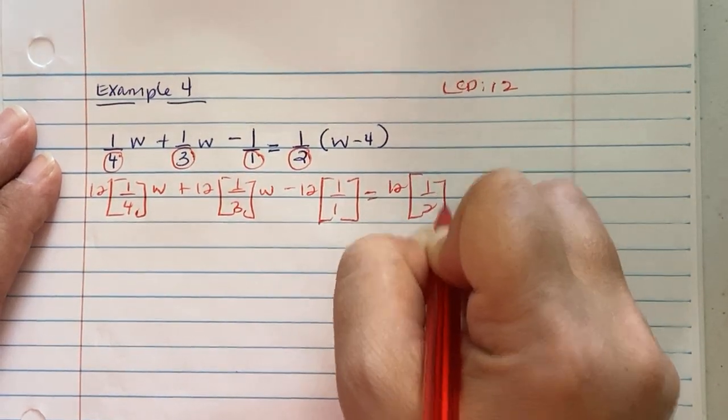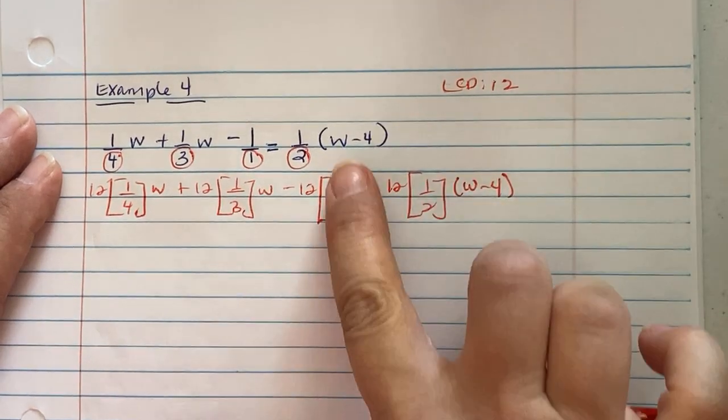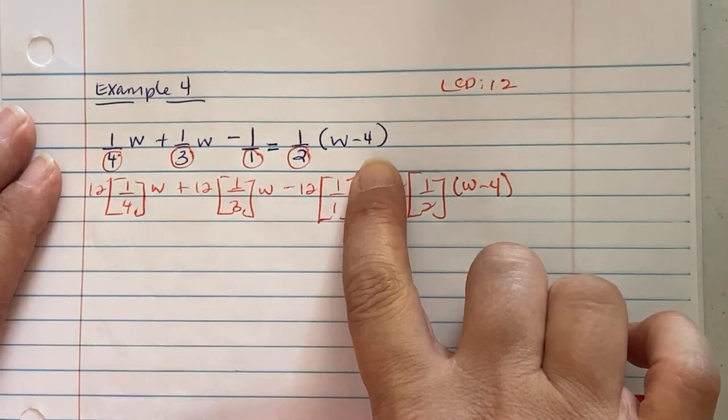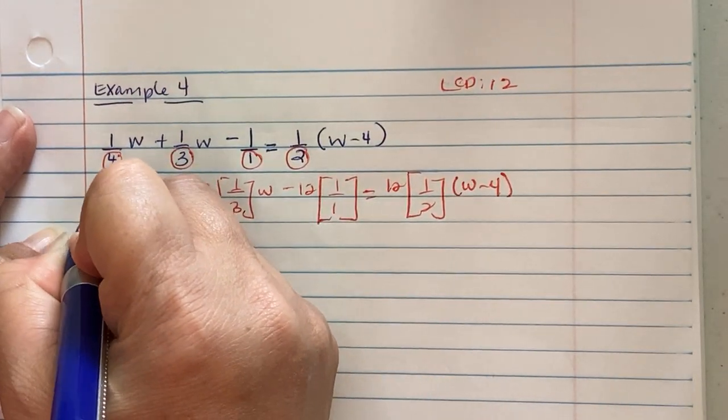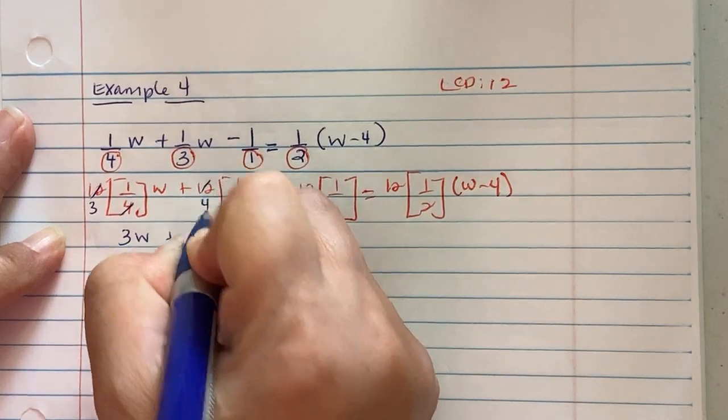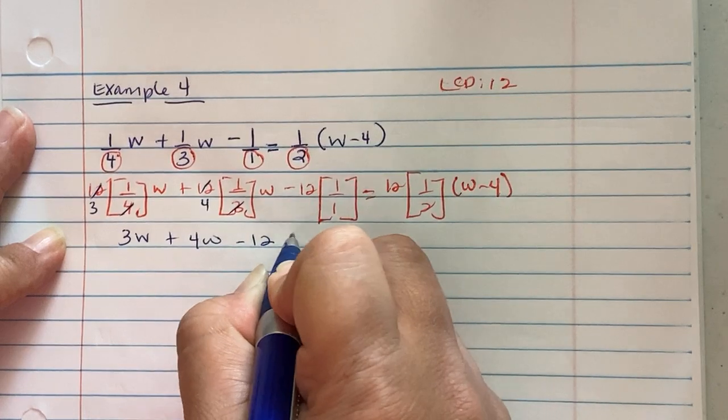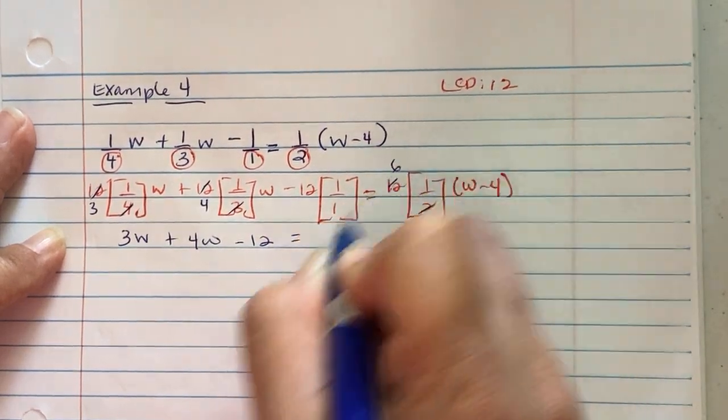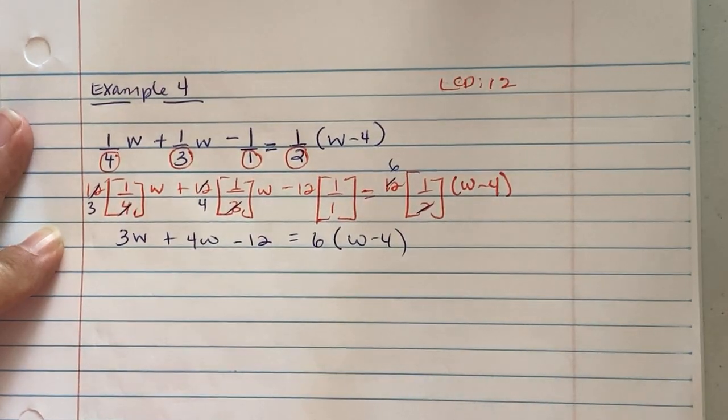And then the parentheses is not affected because it's already protected by the parentheses symbol. We're going to reduce our terms here. 4 goes into 12 three times, so we get 3 with a w. 3 goes into 12 four times, so you get a 4 with a w. Nothing reduces here, so you're just minus 12. 2 goes into 12 six times, so I see 6 parentheses w minus 4.